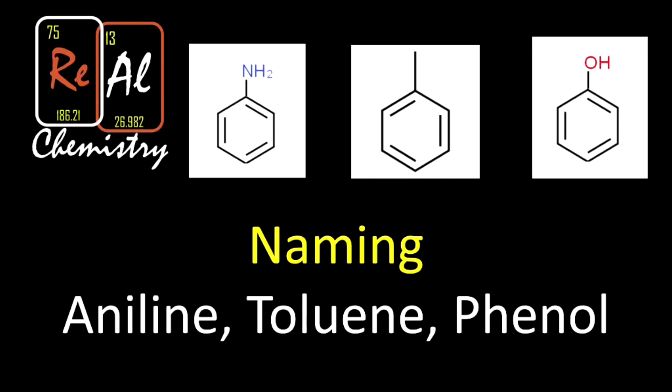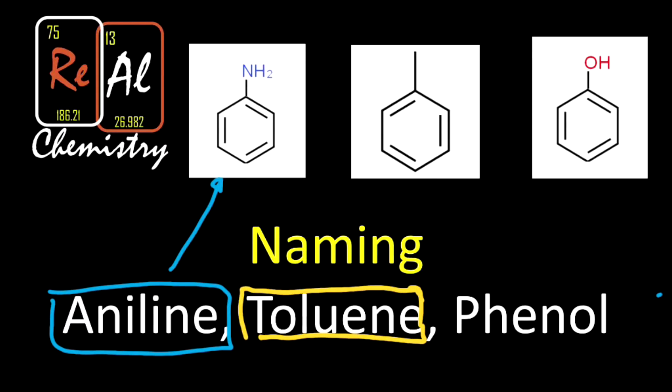So aniline - whenever you see the word aniline, we're talking about a benzene ring with this NH2 on it. Aniline just means a benzene ring with an NH2. Meanwhile, toluene, which is the hardest one to say - say it with me, toluene, toluene - yes, toluene.